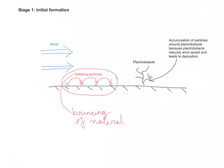The wind picks up the material and carries it briefly for a few seconds and then drops it. And it keeps doing that. And it's a bit of a bouncing effect. And this will continue until the particles reach a plant or an obstacle. And they start to accumulate around the obstacle, as we can see here. And the reason it accumulates is that the plant or obstacle reduces the wind speed and leads to deposition. And so over time, we get an accumulation of particles.